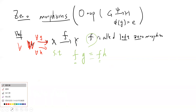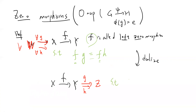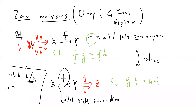To dualize: f from X to Y is a right zero morphism if for any Z and any morphisms g, h from Y to Z, we have g∘f = h∘f. If f is both a left and a right zero morphism, it is called a zero morphism.